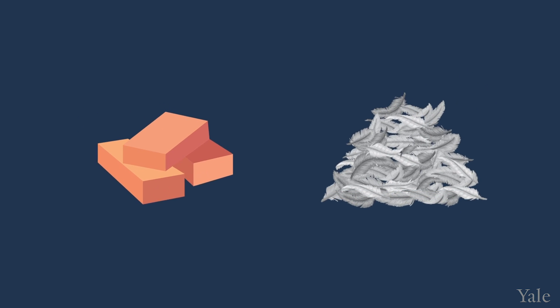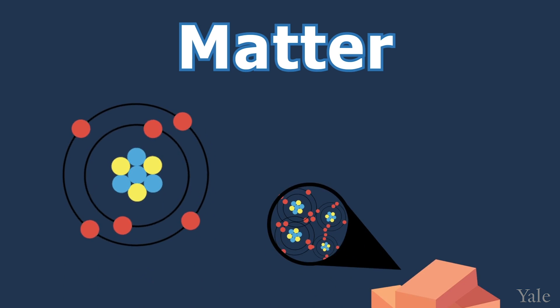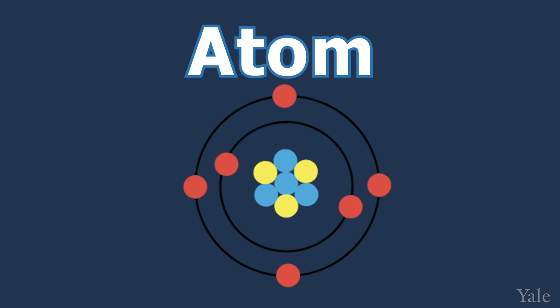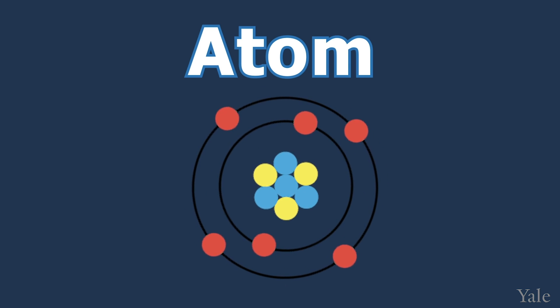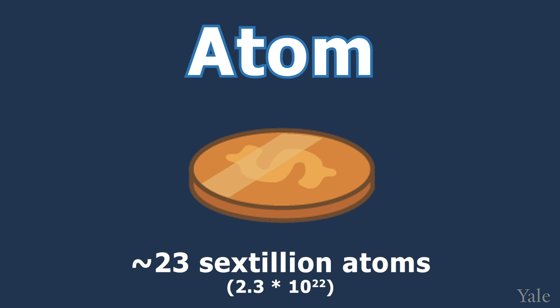Even though bricks and feathers are very different, they're both made up of matter. But what exactly is matter made up of? Matter is made up of one or many microscopic building blocks called atoms. An atom is the smallest unit of matter, and they are so tiny that a penny contains approximately 2.3 times 10 to the 22nd atoms, or 23 sextillion atoms.